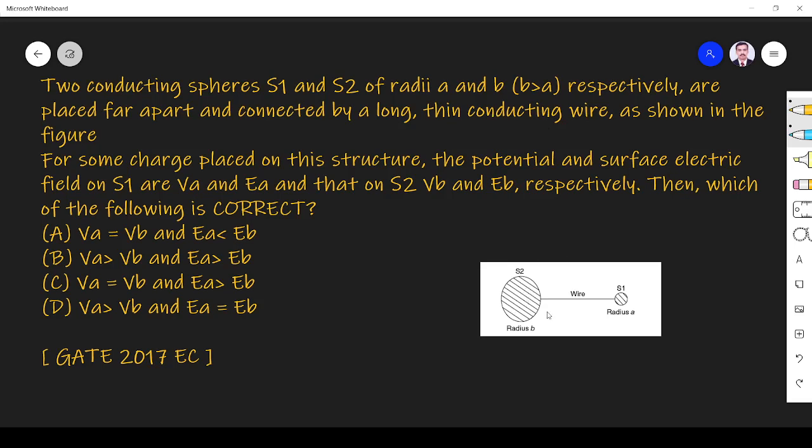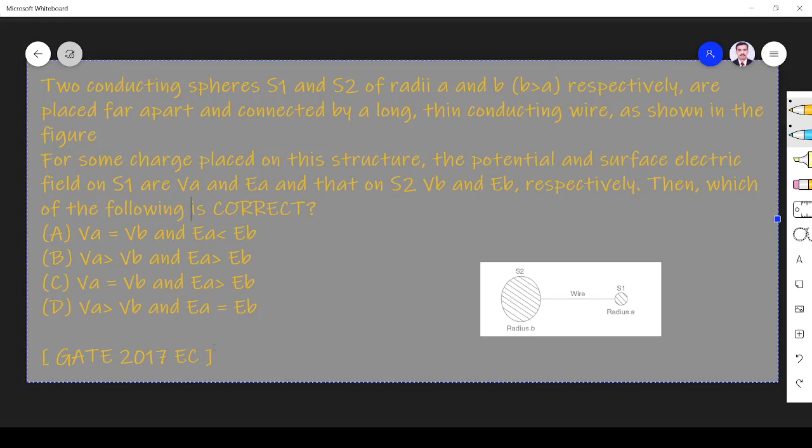It is shown here right. This is S2. The radius is B they have given and another one is A. So B is greater than A.